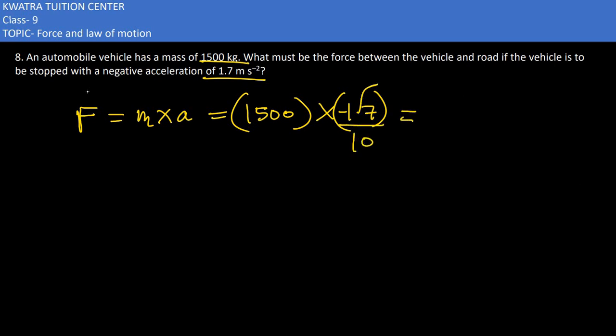First of all, remove the decimal here. One zero cancels with one zero. Now multiply 15 and 17, so you would get 225 and put a zero.